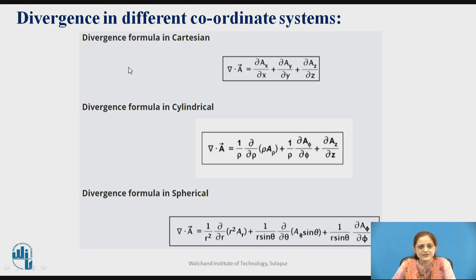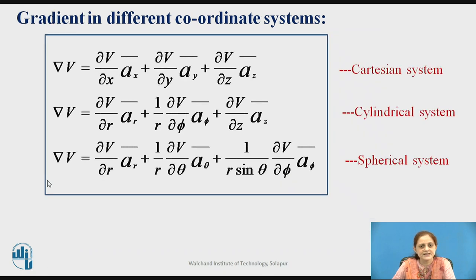The divergence can be defined in different coordinate systems. In Cartesian: ∂a_x/∂x + ∂a_y/∂y + ∂a_z/∂z. In cylindrical coordinates: (1/r)(∂/∂r)(r â_r) + (1/r)(∂a_phi/∂phi) + ∂a_z/∂z. The divergence formula in spherical coordinates is given by a third equation. The gradient of V is defined in Cartesian with x, y, z coordinates; in cylindrical with r, phi, z; and in spherical with r, theta, and phi.